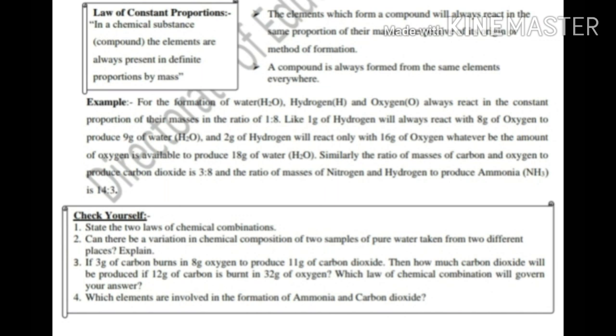Now we will discuss some more examples on law of constant proportions. For the formation of water H2O, hydrogen H and oxygen O always react in the constant proportion of their masses in the ratio of one ratio eight. Like one gram of hydrogen will always react with eight grams of oxygen to produce nine grams of water H2O.